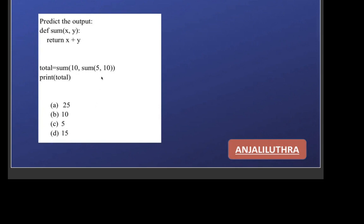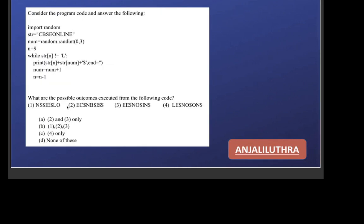You have to predict the output — there is a nested function call here. First, solve the inner call: sum(5, 10) — 5 goes to x and 10 goes to y, it returns 15. That 15 replaces the inner call, so 5 + 10 = 15. Now it becomes sum(10, 15): x gets 10, y gets 15, they add up to 25. 25 goes into total and is printed. So option a is correct — the output of this code is 25.